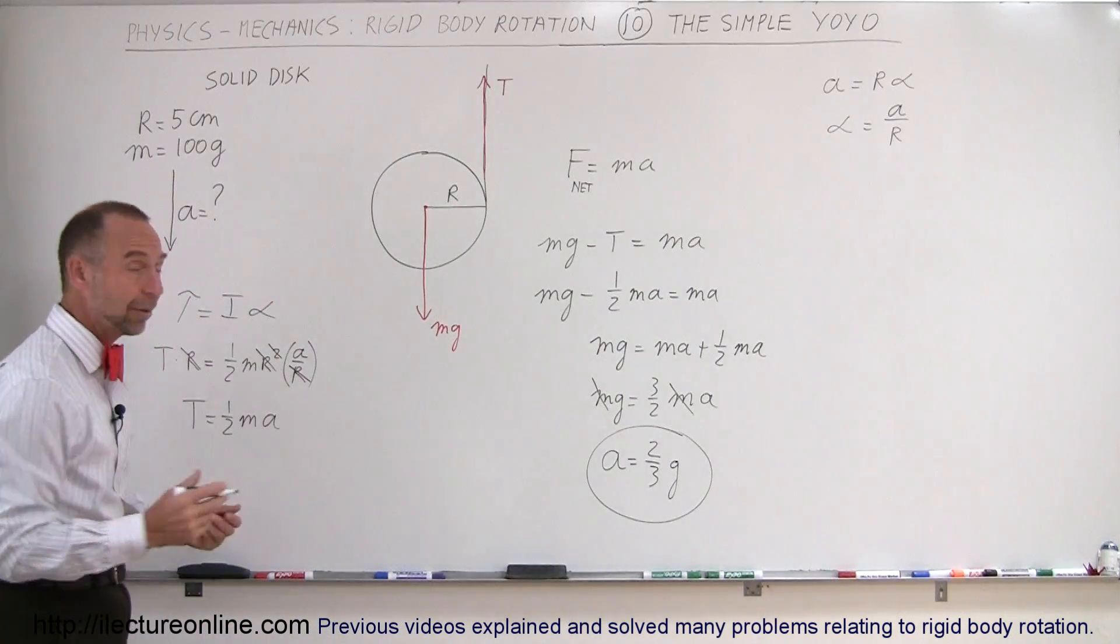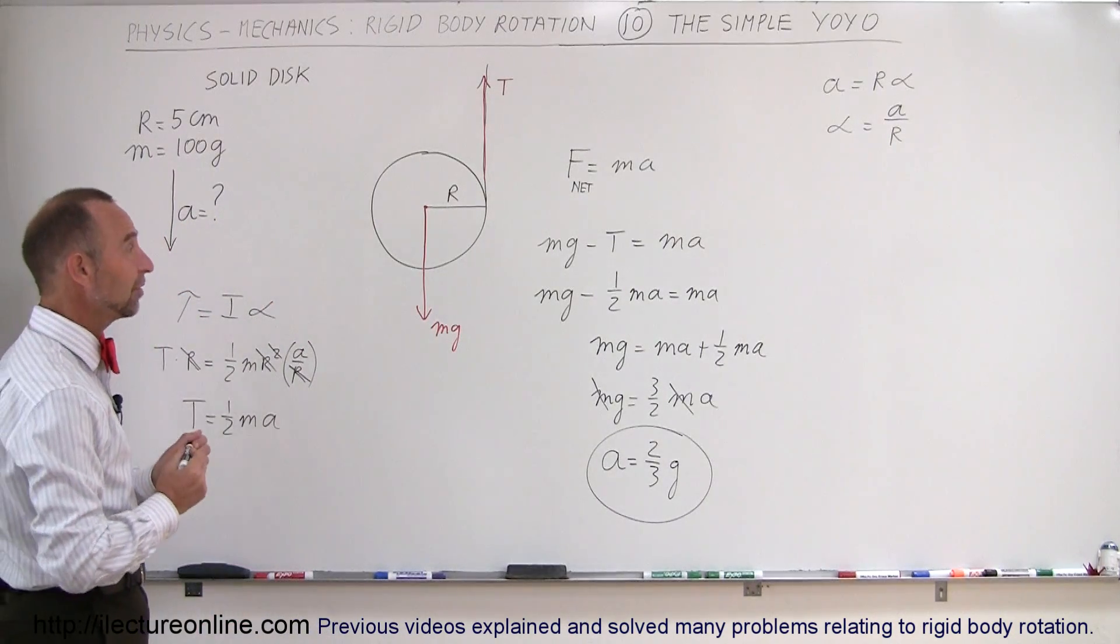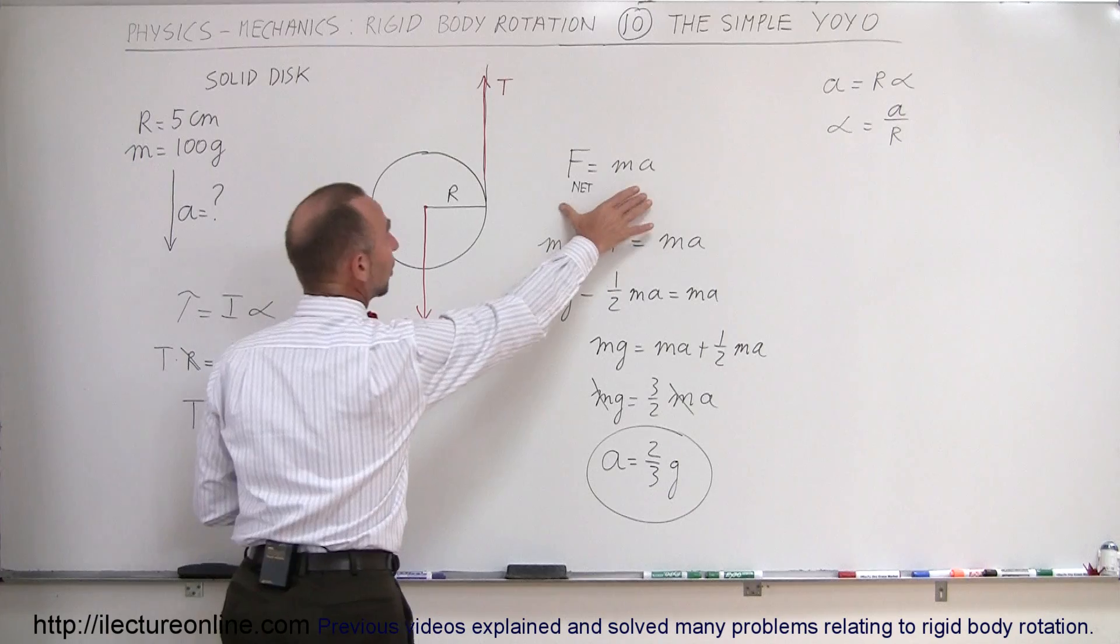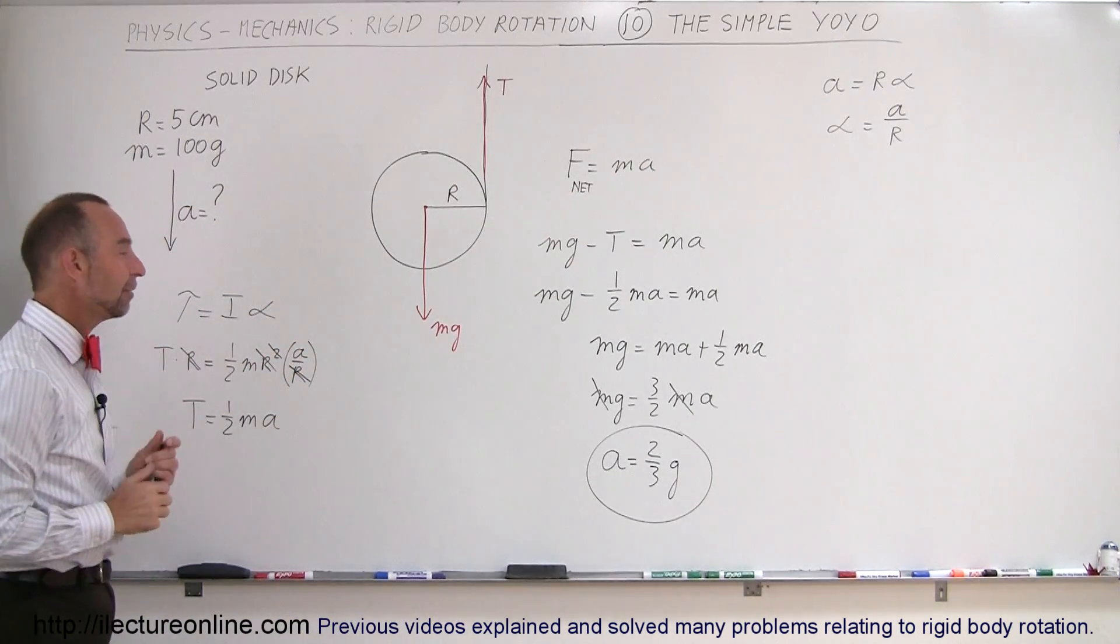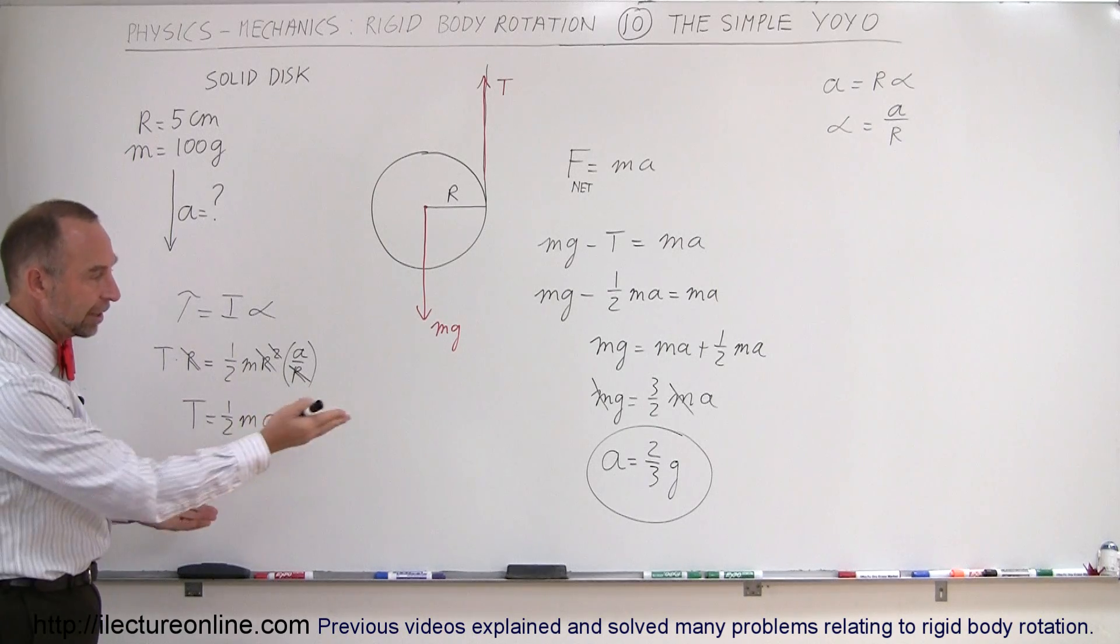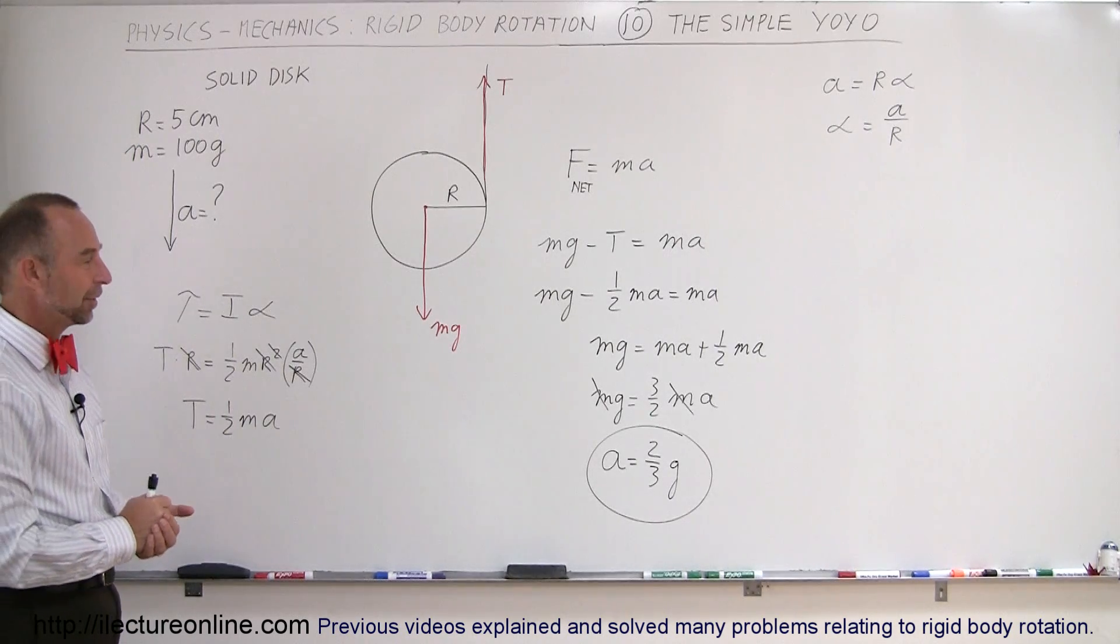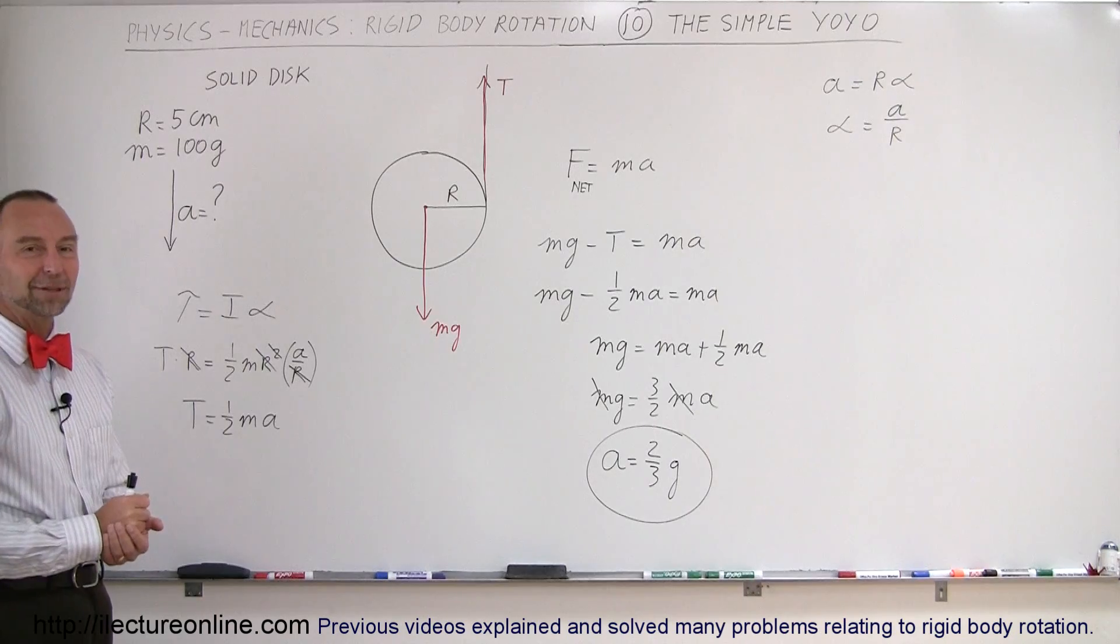So it's actually quite simple, but again the methodology is exactly the same as the previous examples. We use Newton's second law and the equation for torque equals I-alpha, solve those simultaneously, and we come out with the result. The answer is A is two-thirds the acceleration due to gravity.